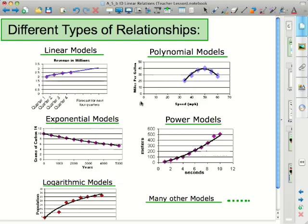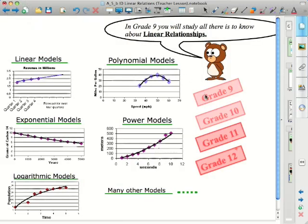So students have to create scatter plots and lines and curves of best fit. And we fit these different models. Well, these models, I now tell them, represent different types of relationships. And what we're going to be doing in the next four years in their high school career is going through these different types of relationships.